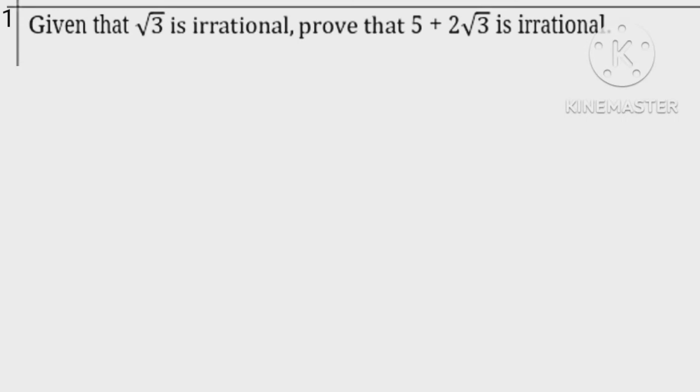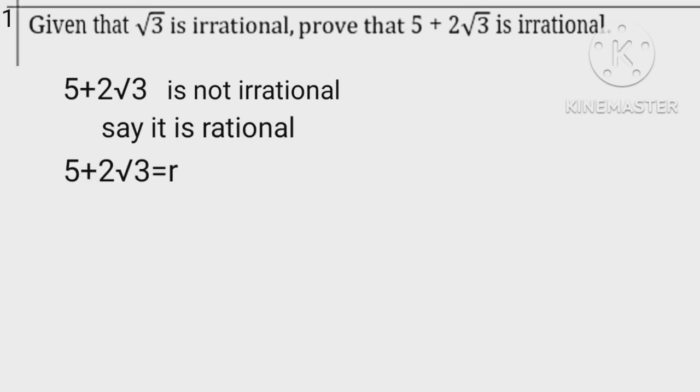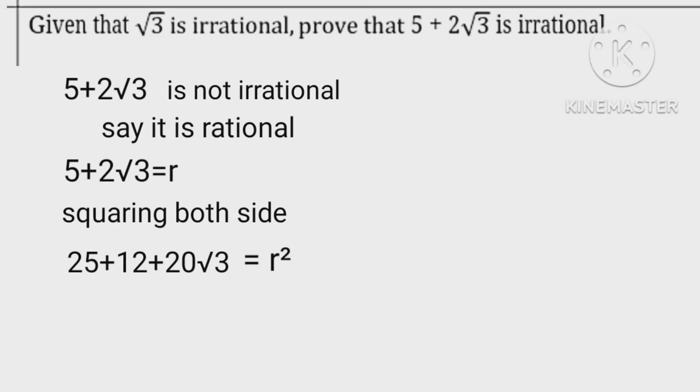Taking the first question from section C: let 5 plus 2 root 3 is not an irrational number. Say it is rational, equals r. Squaring both sides: 25 plus 12 plus 20 root 3 equals r squared. Hence 37 plus 20 root 3 equals r squared.